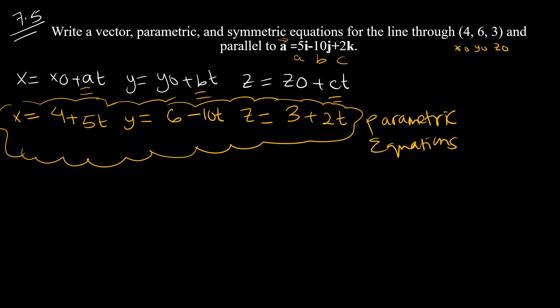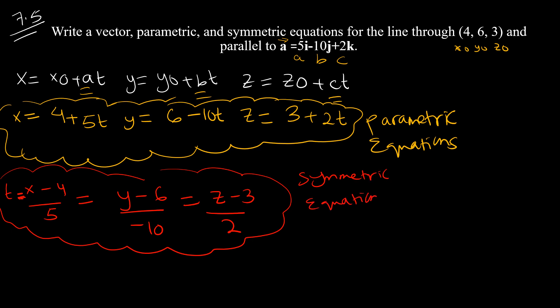For the symmetric equation, we isolate T and get x minus 4 over 5 equals T. Since they all equal T, we make them equal to each other: equals y minus 6 over negative 10, equals z minus 3 over 2. Move the 6 to the other side, divide by negative 10. For z, isolate T by z minus 3, then divide by 2. This is my symmetric equation.